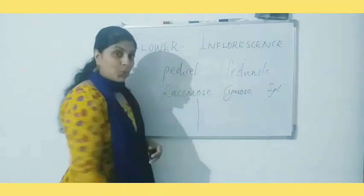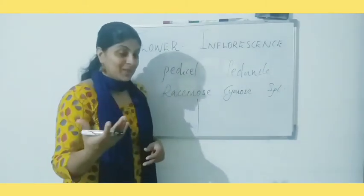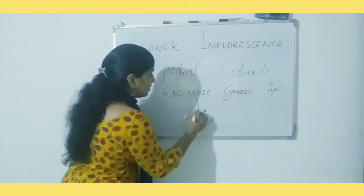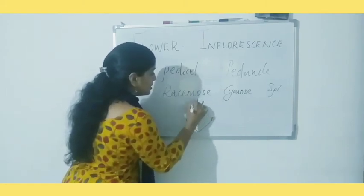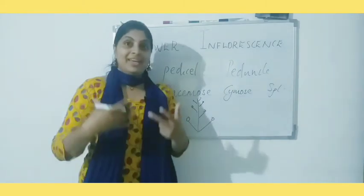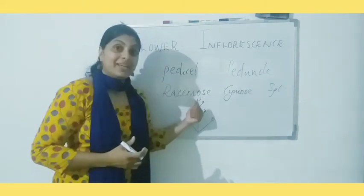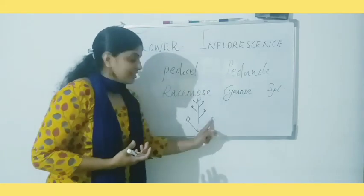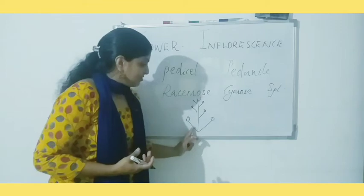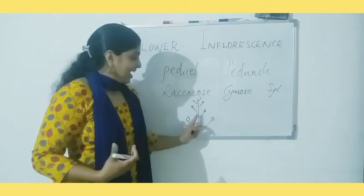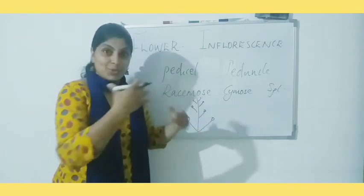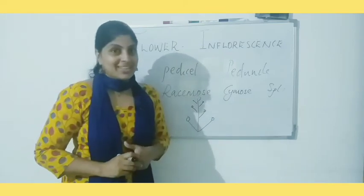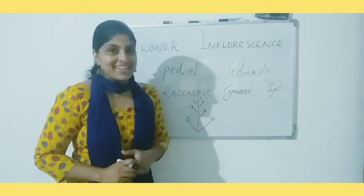The main axis is known as peduncle. The first flower will be formed at the base, then the next, and new flowers are added continuously. The peduncle grows continuously so we can see the formation of older flowers towards the basal portion and younger flowers towards the topmost region.